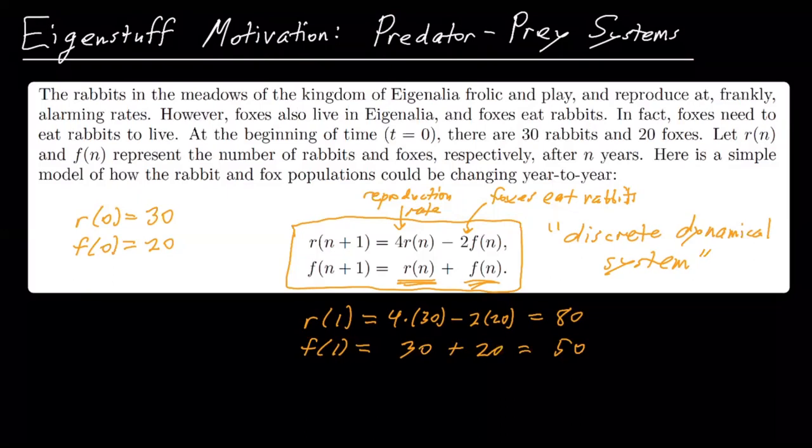So this is called a discrete dynamical system. The idea is, it's called discrete because by the way, we're just measuring year by year. We're not measuring moment to moment. It's not instantaneous. There are dynamical systems that are instantaneous where you use differential equations and derivatives, but this is considered discrete because we're just going step by step. And so there's some coarseness to the model, but it's still a good way to model populations.